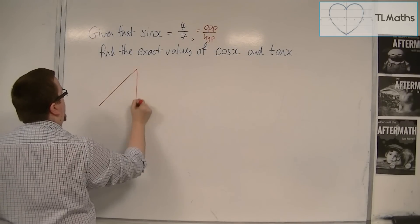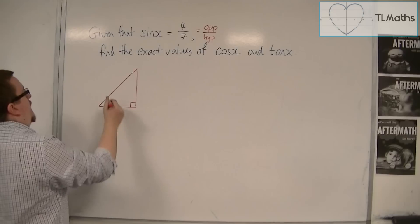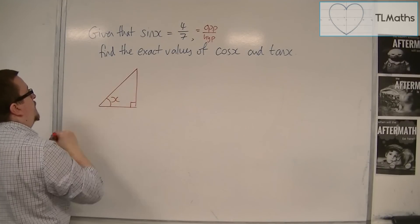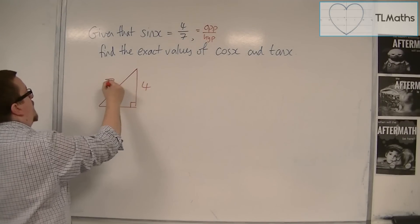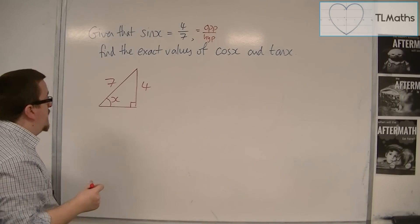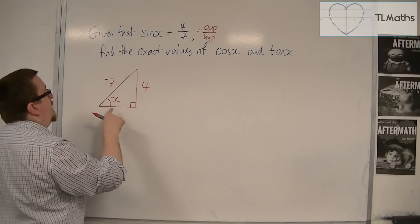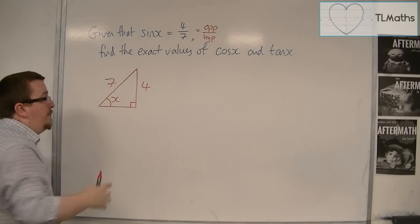So we could draw ourselves a right-angled triangle. If that's my angle x, then this would be my opposite side of 4. That would be my hypotenuse of 7. That would allow me to find the adjacent using Pythagoras.